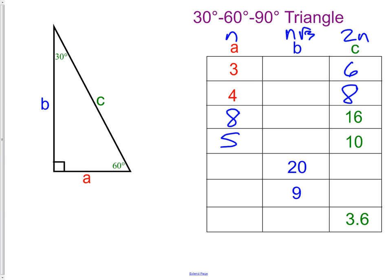Now we can fill out the middle column. B would be 3 root 3, 4 root 3, 8 root 3, and 5 root 3. Those are pretty easy.